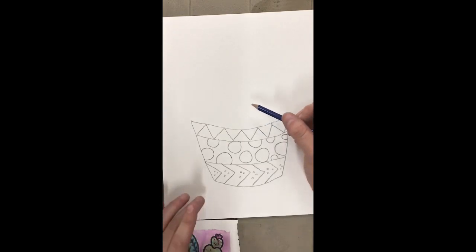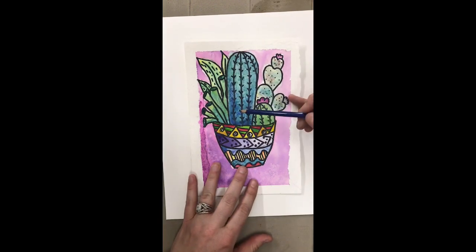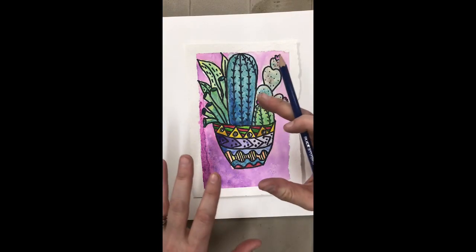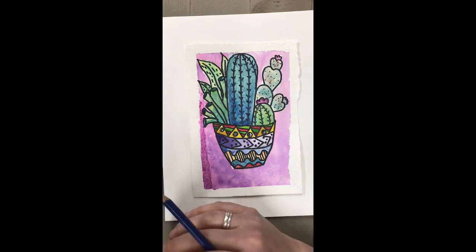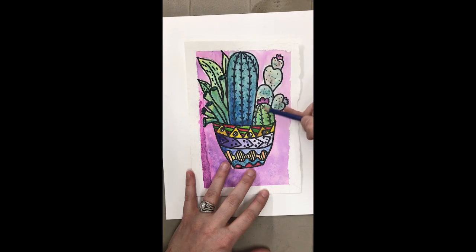Okay, so we are going to work on thinking about overlapping when we put our cactuses in. So overlapping is when we know something is in front of something or something is behind it, so we're going to use overlapping to create depth. We are also going to think about varying heights. Varying heights means that some things are really tall and some things are really small.